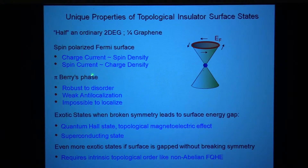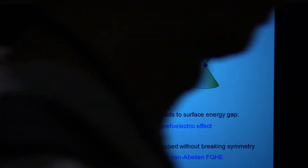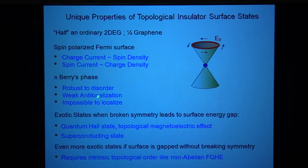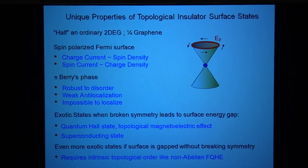Another important feature is that when you go around this Dirac point, you pick up a minus sign — my favorite minus sign. This Pi-Berry phase endows these electrons with a very robust property: you can't localize them. You can see this if you do perturbation theory with weak disorder — there's a classic calculation to compute the first correction due to localization.